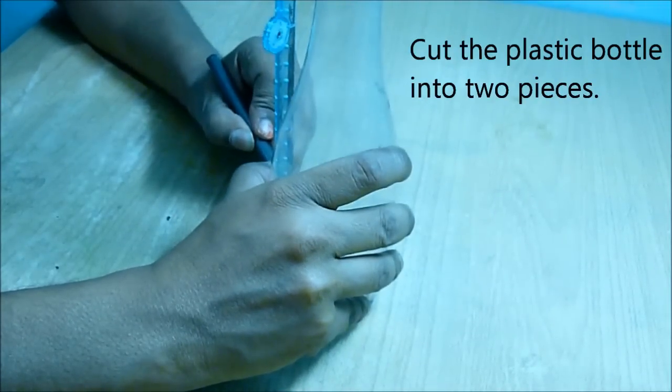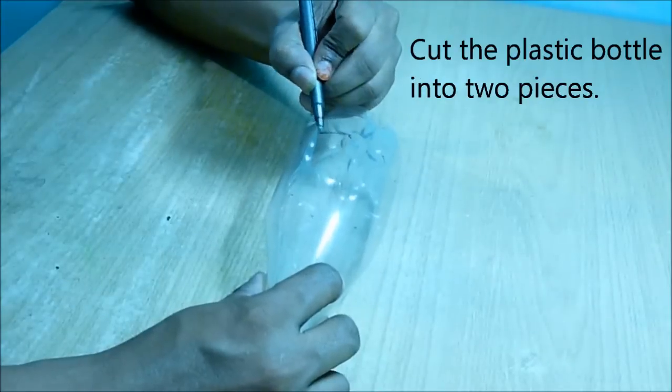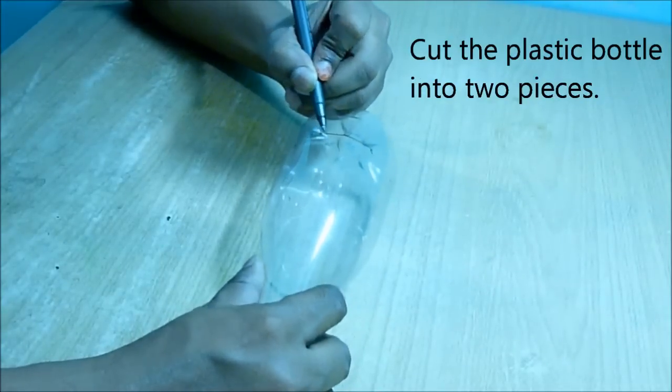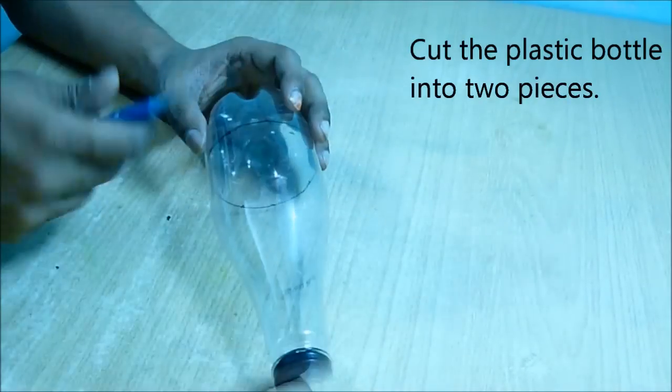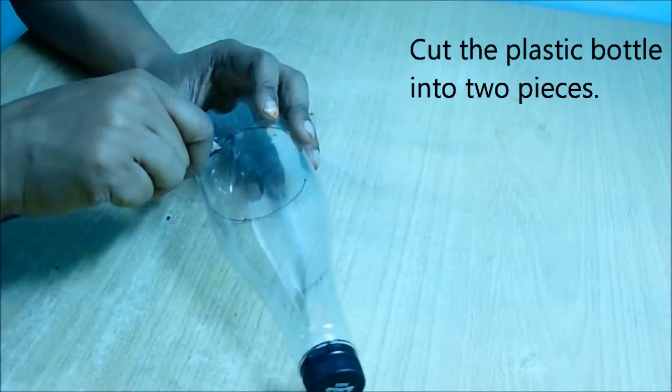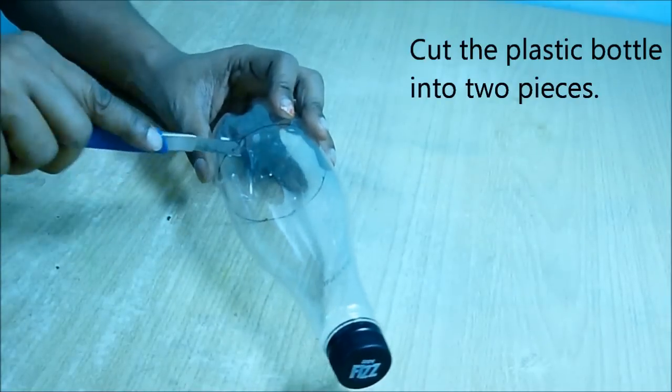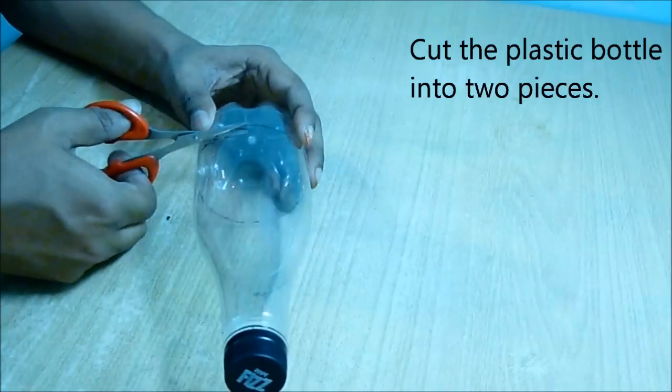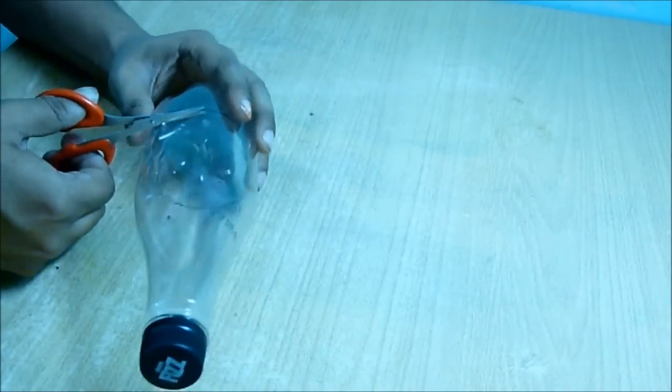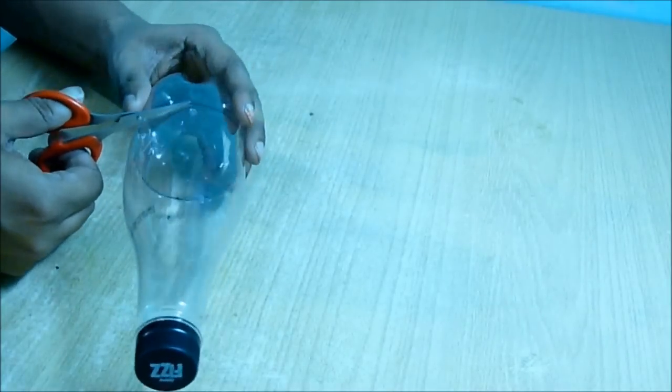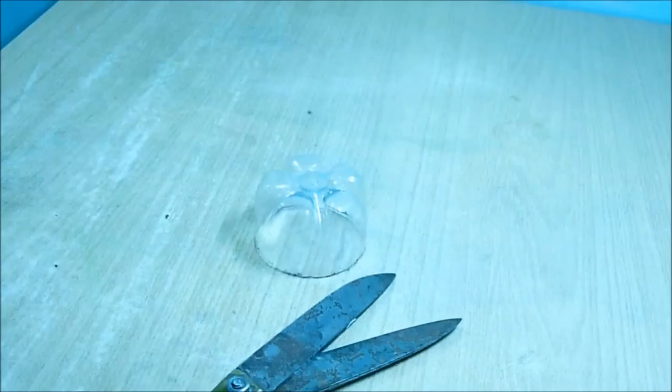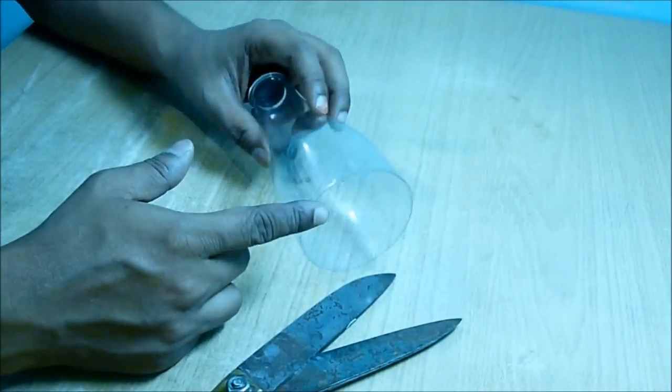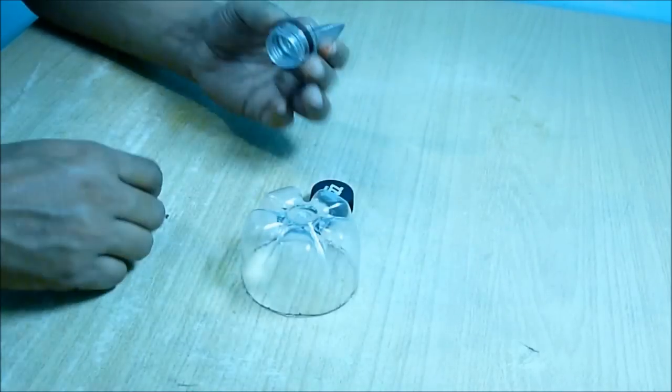Mark all around the bottle and then join those dots to have a circular mark around the bottle. We have to cut this place exactly using a knife or scissors. Make sure the edges are not sharp. If they are sharp or uneven, make them even.